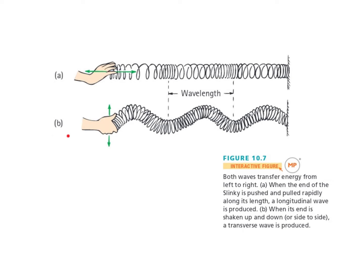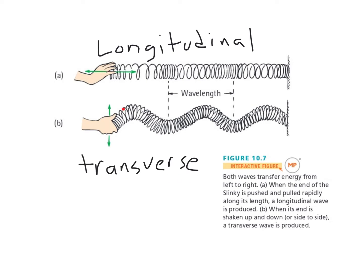We can contrast that with the transverse case. Here, the person grabbing hold of the slinky is shaking it up and down, but the wave is still traveling left to right — so the vibration is at a right angle to the wave motion. In both cases the wave moves toward the wall, but in the longitudinal case the hand is pushing and pulling along the direction the wave is moving, while in the transverse case the hand is shaking at a right angle to the wave's motion.